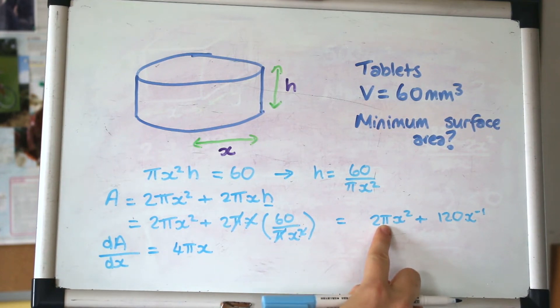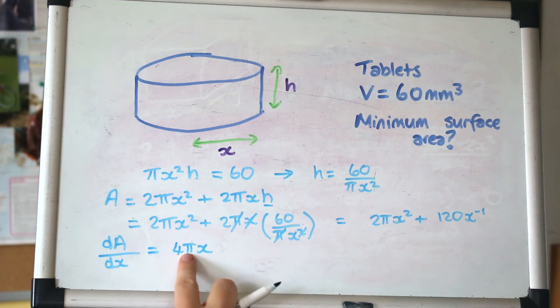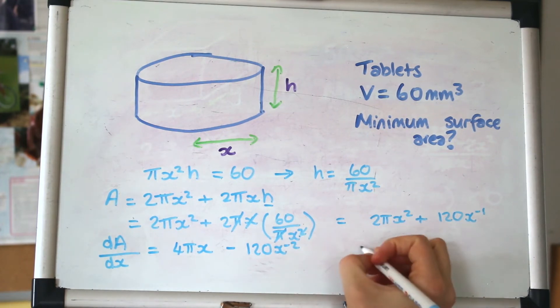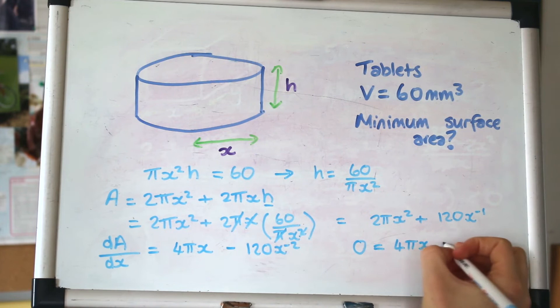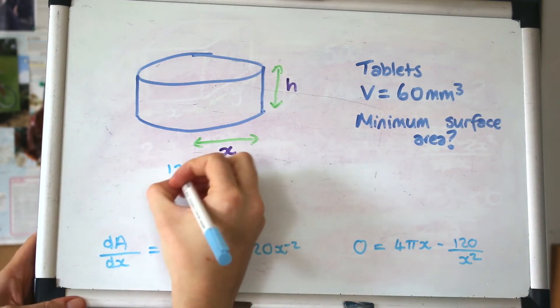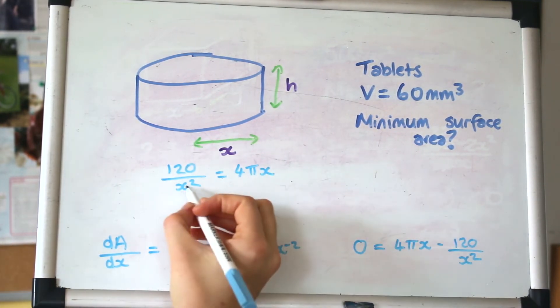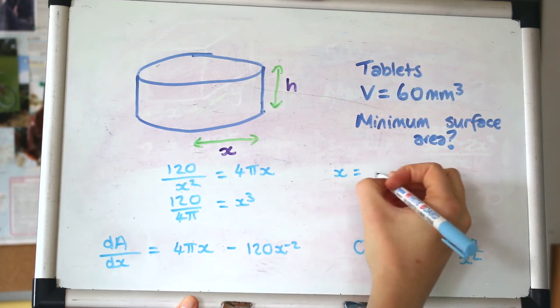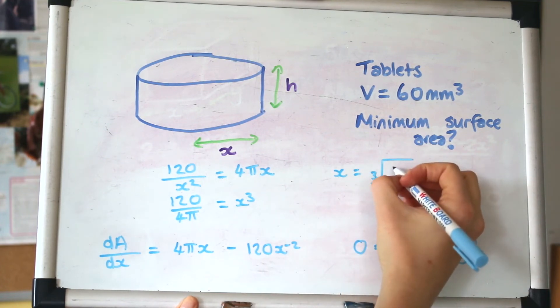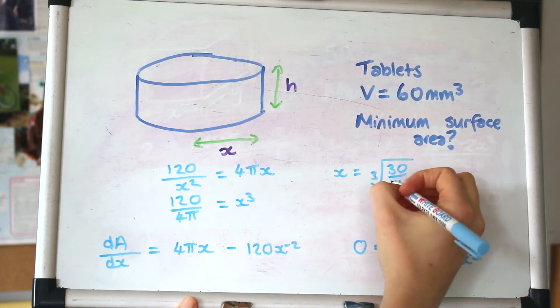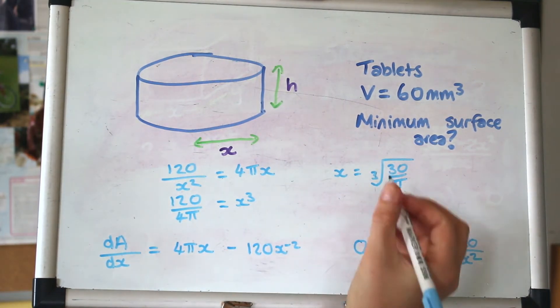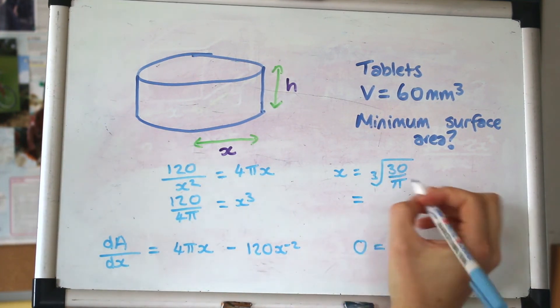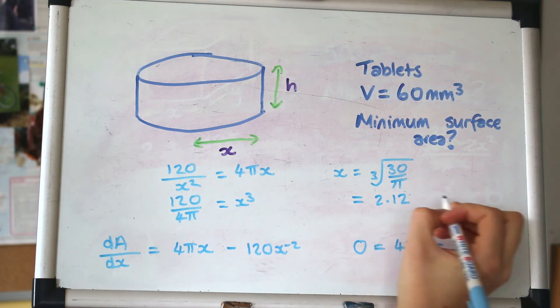When you differentiate and you've got something like π, π is just a number, not a variable, so just treat it as a number. Bring that power down to the front, it just carries on sitting there. We're setting that equal to zero and solving. Multiplying up and bringing the 4π down, x = ∛(30/π) = 2.12 mm to three significant figures.